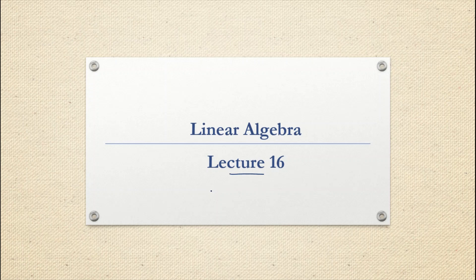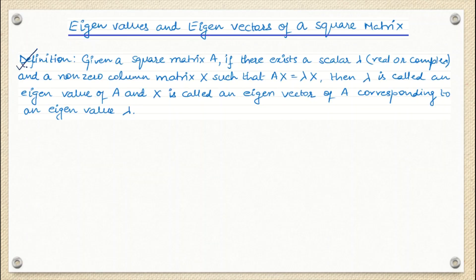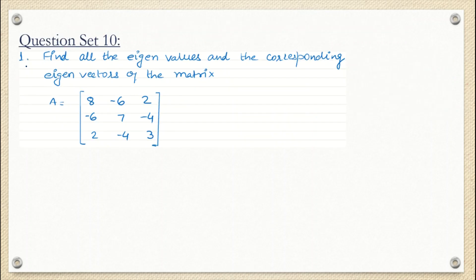In the last class, lecture number 15, we discussed the concept and application of eigenvalues and eigenvectors — the theory behind it. In today's class, we have done the mathematical calculation and obtained the characteristic equation. Now we are going to find out the eigenvalues and eigenvectors using this example.